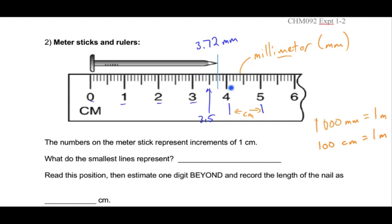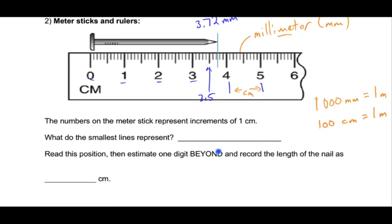Filling in the charts: what's the length of the nail? It's 3.72 centimeters. What do the smallest lines represent? That's a millimeter. That's how you fill out the report sheet — you fill in these blanks and use that information for other calculations.